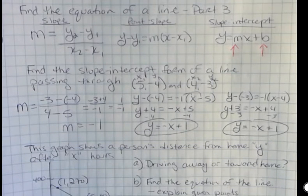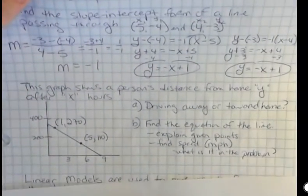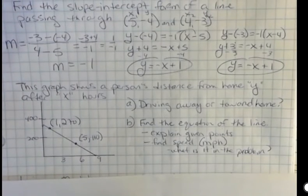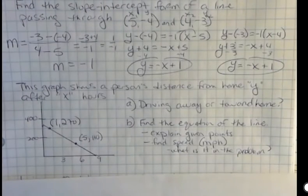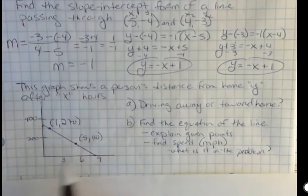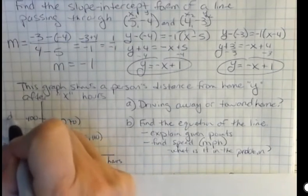Let's take a look at this one. This graph shows a person's distance from home, which we're calling y. So y is their distance from home after x hours. And so I have this equation, this graph drawn, where this is hours down here, and this is distance in miles.